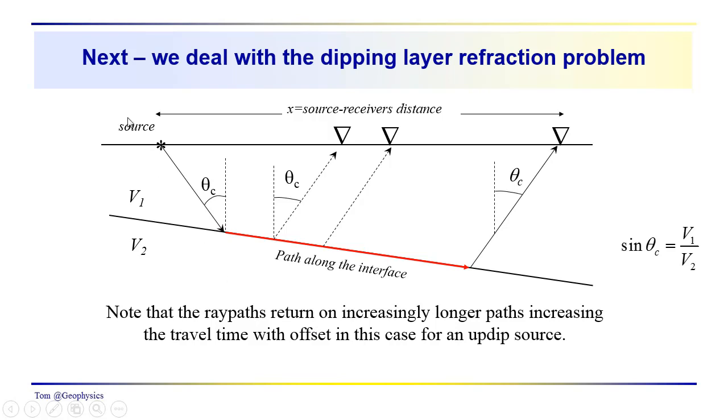So in a nutshell that has been the layer too thin and the velocity inversion problems. The kinds of errors that you can run into when you're working with data and you're missing a layer. Either because of a velocity inversion or because it's too thin. So what we're going to do next time is we're going to take a look at the dipping layer refraction problem.